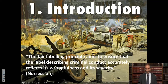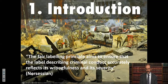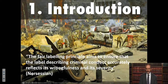The fair labelling principle aims to ensure that the label describing criminal conduct accurately reflects its wrongfulness and its severity. Now this leads us to a potential problem. In national criminal law we tend to think of the direct physical perpetrator as the person most responsible for a crime. So in a murder, the person most responsible is the murderer — the person who pulled the trigger on a gun killing someone else. An accessory might be involved; you might aid and abet the murder by giving the murderer the gun. But the aider and abetter is generally seen as less responsible — somehow more remote from the crime itself.